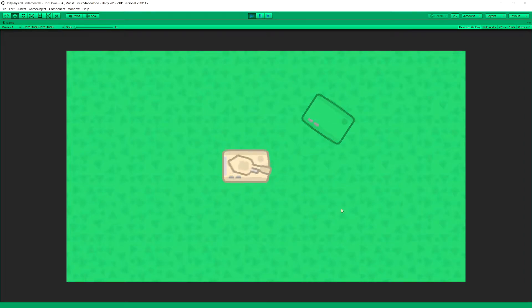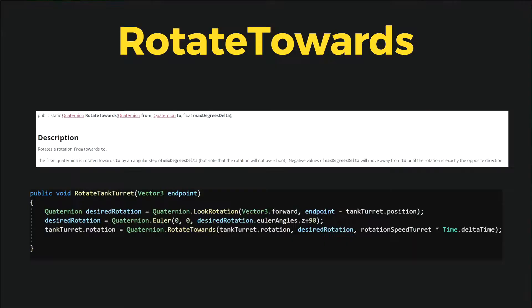And it all works because of the second method that we have in our code. And this method is RotateTowards. Now in Unity documentation the description is a little bit vague. So this method allows us to rotate the tank turret from starting position, so where it is currently pointing.